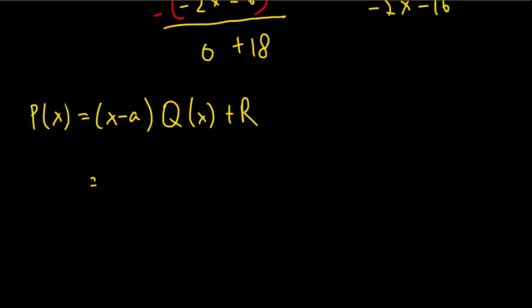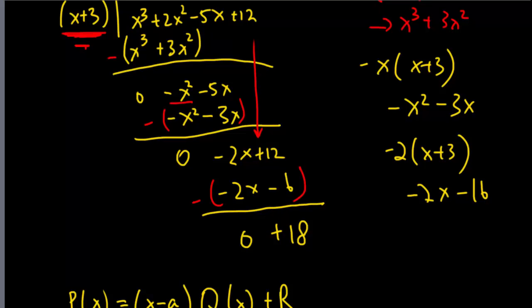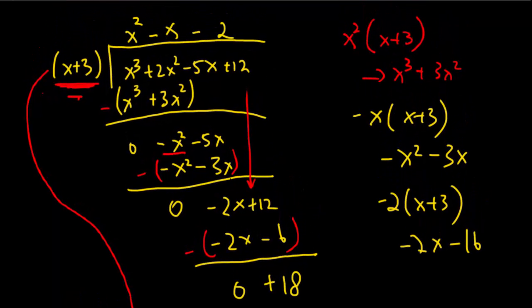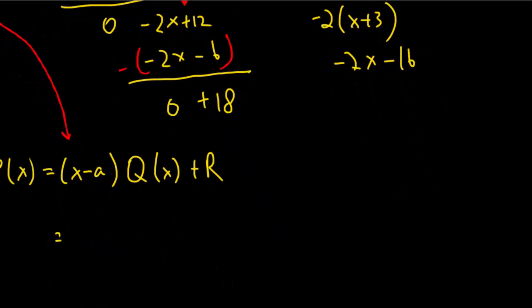So what was my function? My function was this guy. So that should be here. My quotient is this guy. This is my quotient.